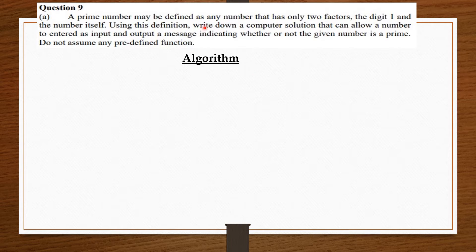A prime number may be defined as any number that has only two factors, the digit one and the number itself. Using this definition, write down a computer solution that can allow a number to be entered as input and output a message indicating whether or not the given number is prime. Do not assume any predefined function.